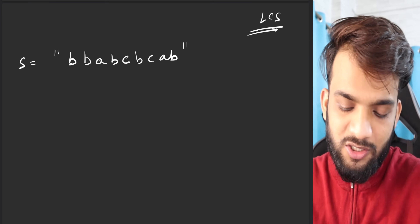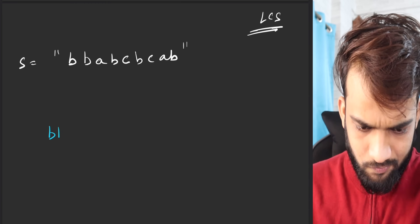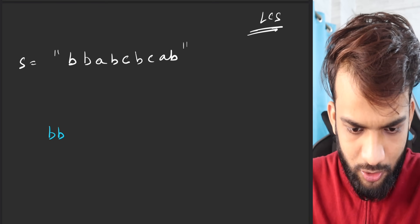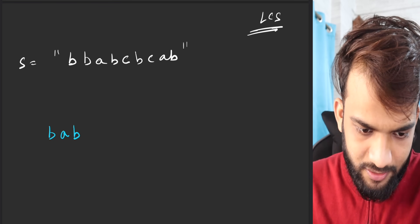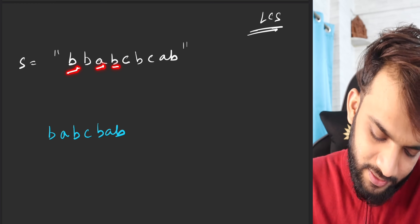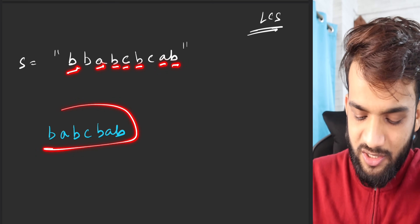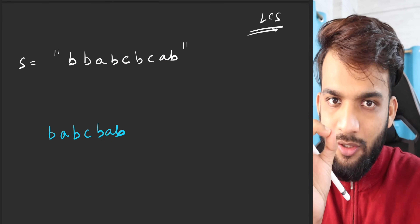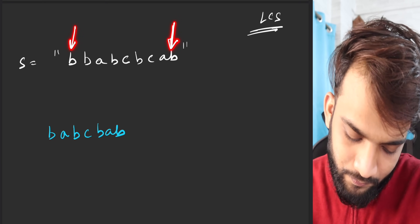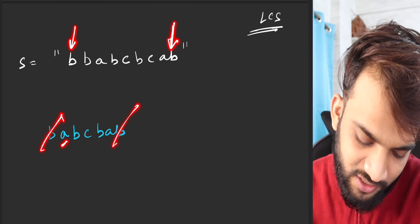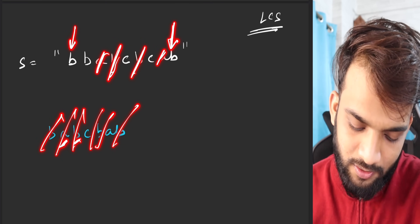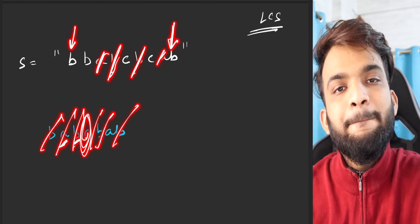For the string 'BBABCBAB', the longest palindromic subsequence is 'BABCBAB'. Notice something: this B matches that B, this A matches that A, this B matches that B, and there is a character in between. It matches from the front and from the back — that's exactly what a palindrome is.